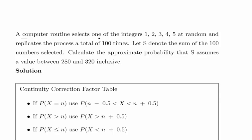A computer routine selects one of the integers 1, 2, 3, 4, and 5 at random and replicates the process 100 times.